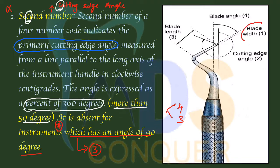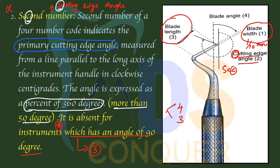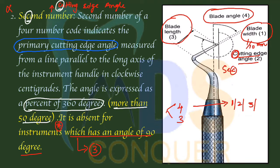To summarize: the first number represents the width of the blade in one-tenth millimeters. The second number represents the cutting edge angle. The third number represents the blade length. And the fourth number represents the blade angle — this is the four-number formula.